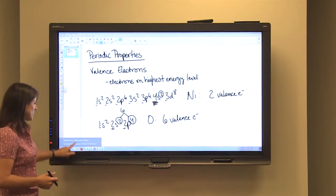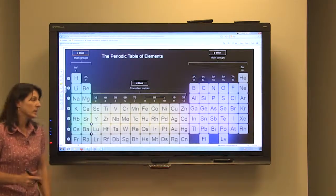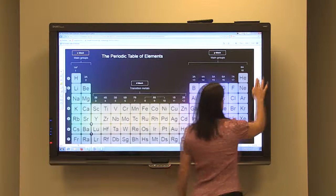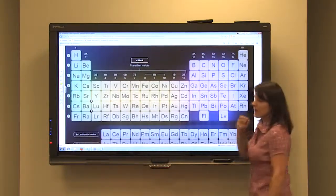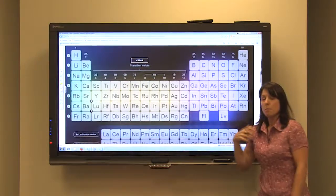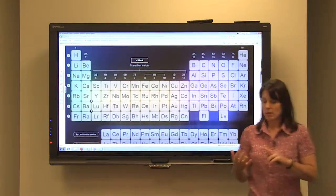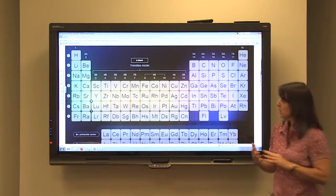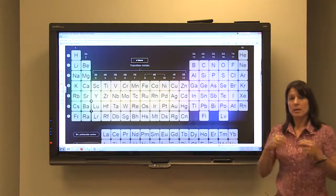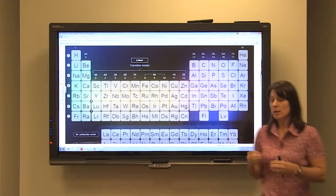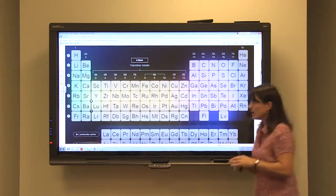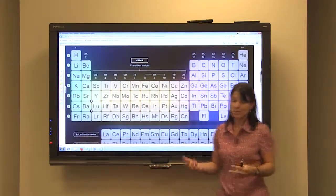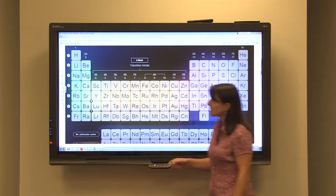Other periodic properties that we can look at: metallic character is one of them. And basically, metals tend to be shiny, good conductors of heat and electricity. They tend to be ductile and malleable elements. So the more metallic characteristics an atom has, the more metal-like it is.